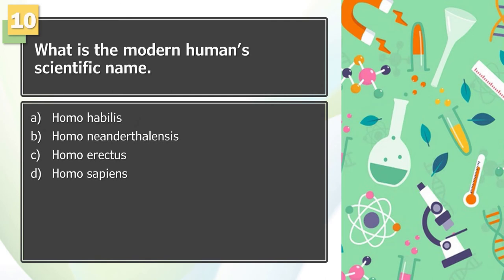Number 10: What is the modern human scientific name? A. Homo habilis, B. Homo neanderthalensis, C. Homo erectus, D. Homo sapiens.